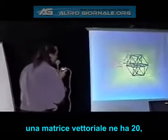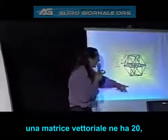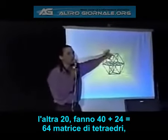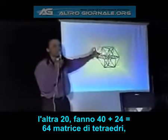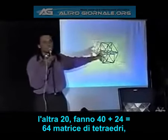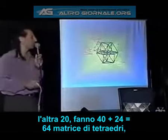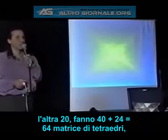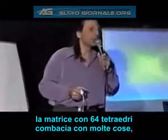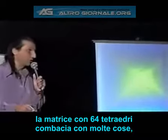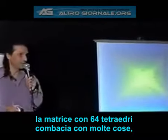One isotropic vector metric is 20, the other one is 20 — that's 40 — plus 24. So 40 plus 24 gave me the 64 tetrahedron metric. The 64 tetrahedron metric is a match to many, many things.